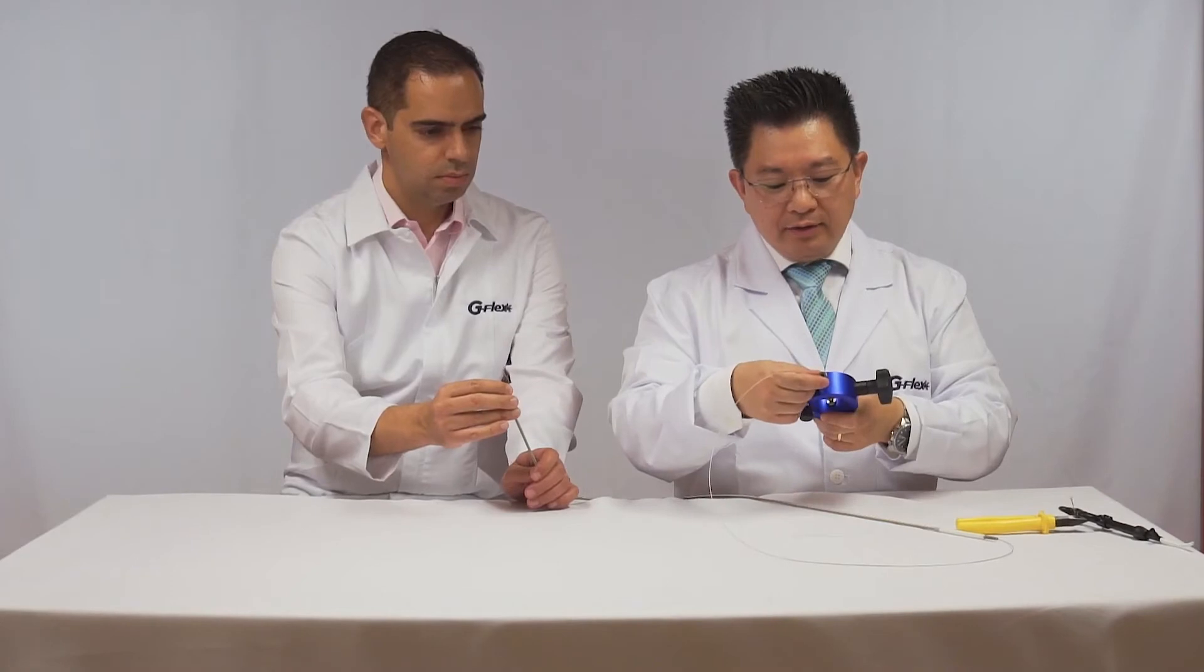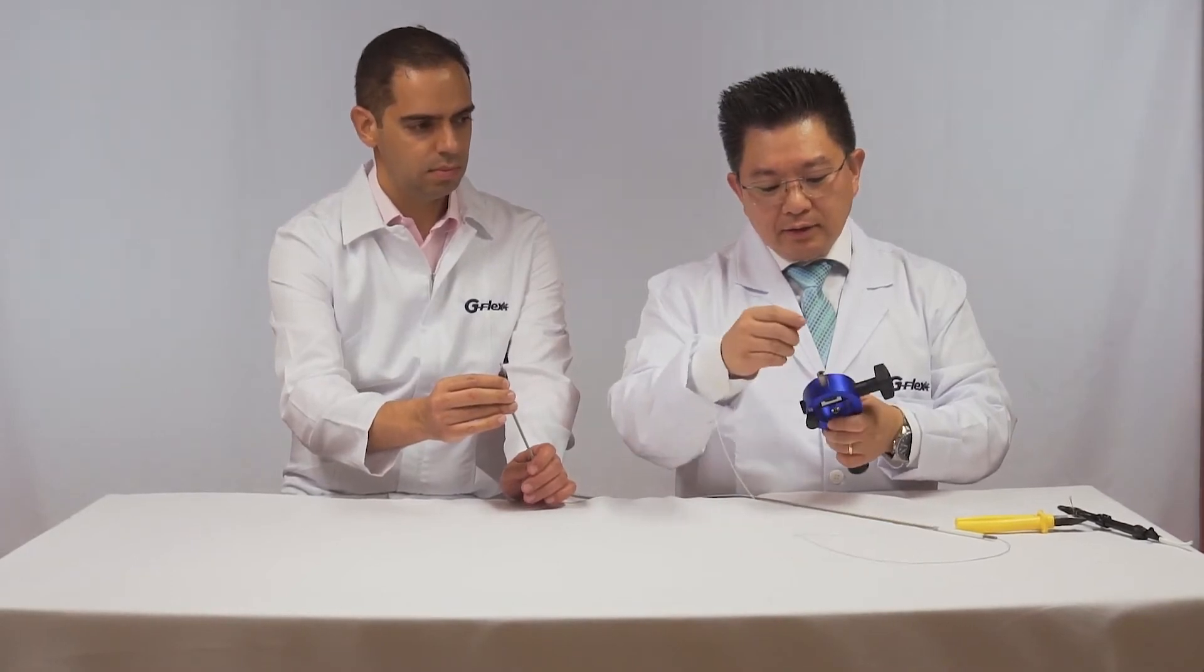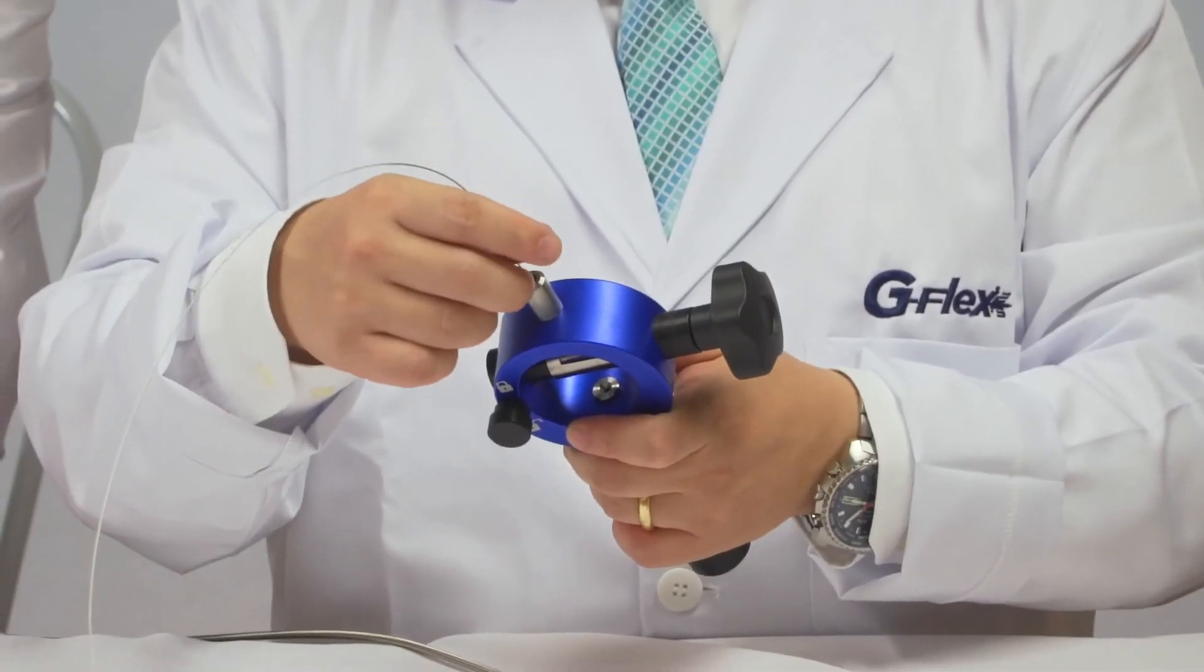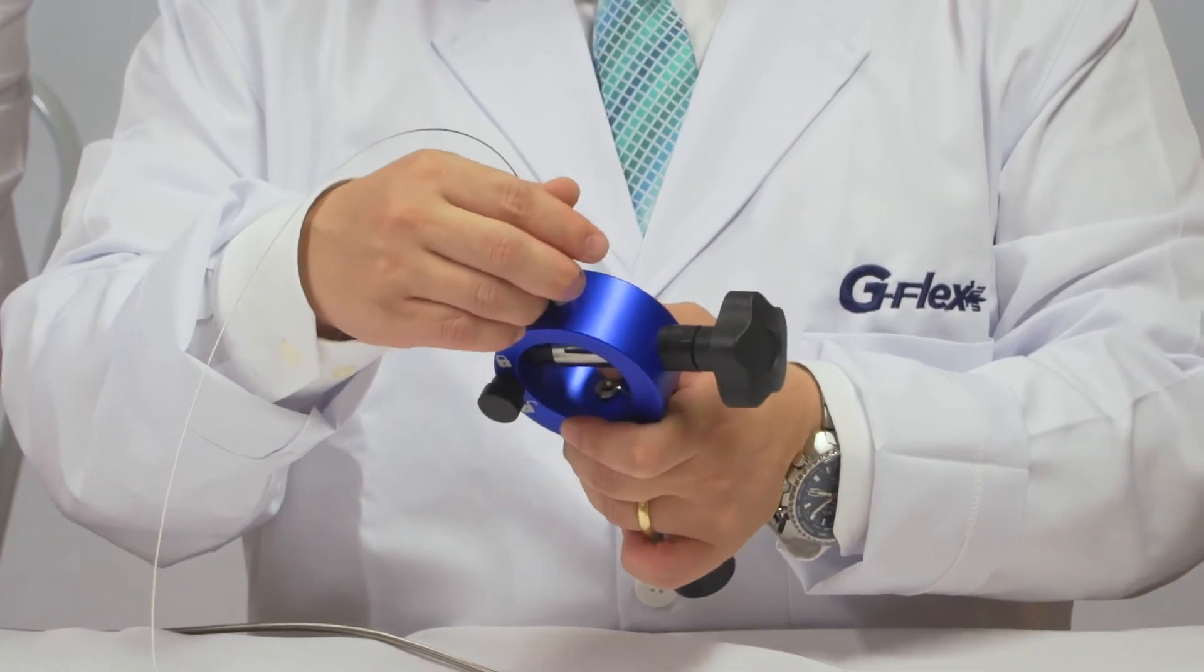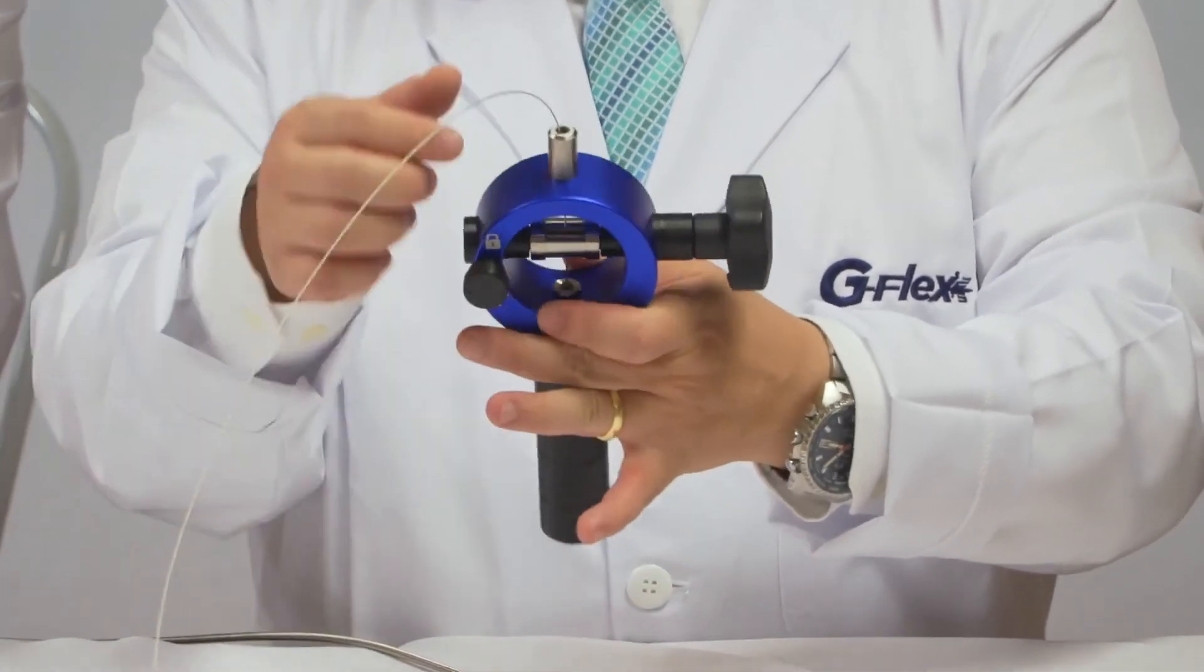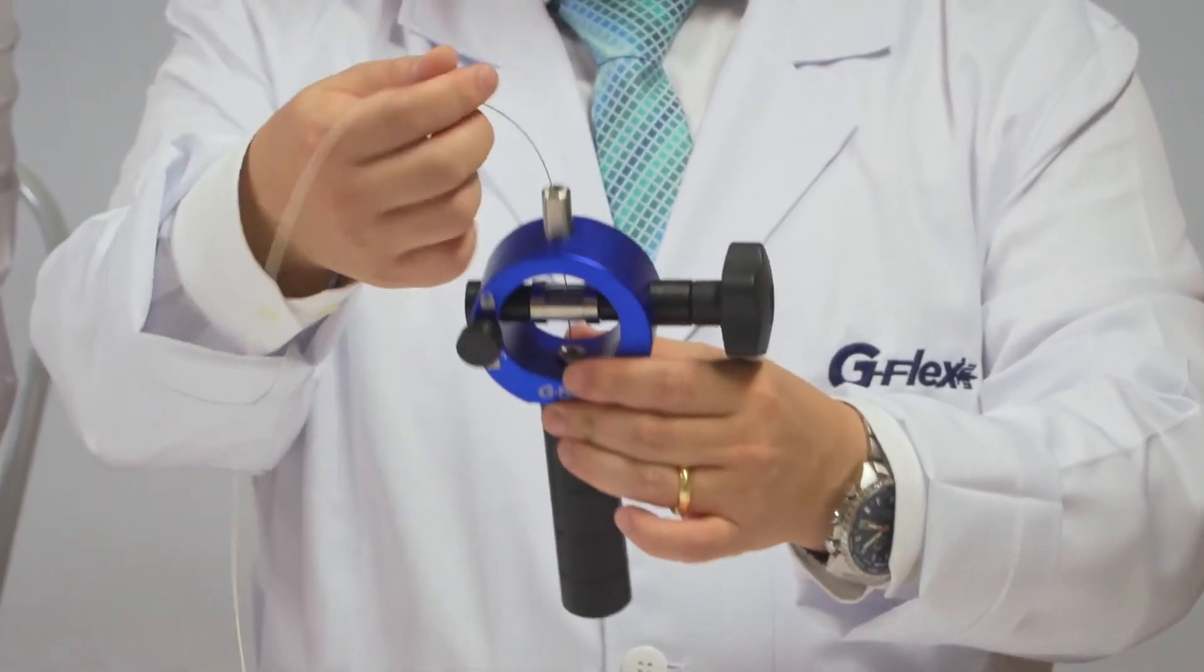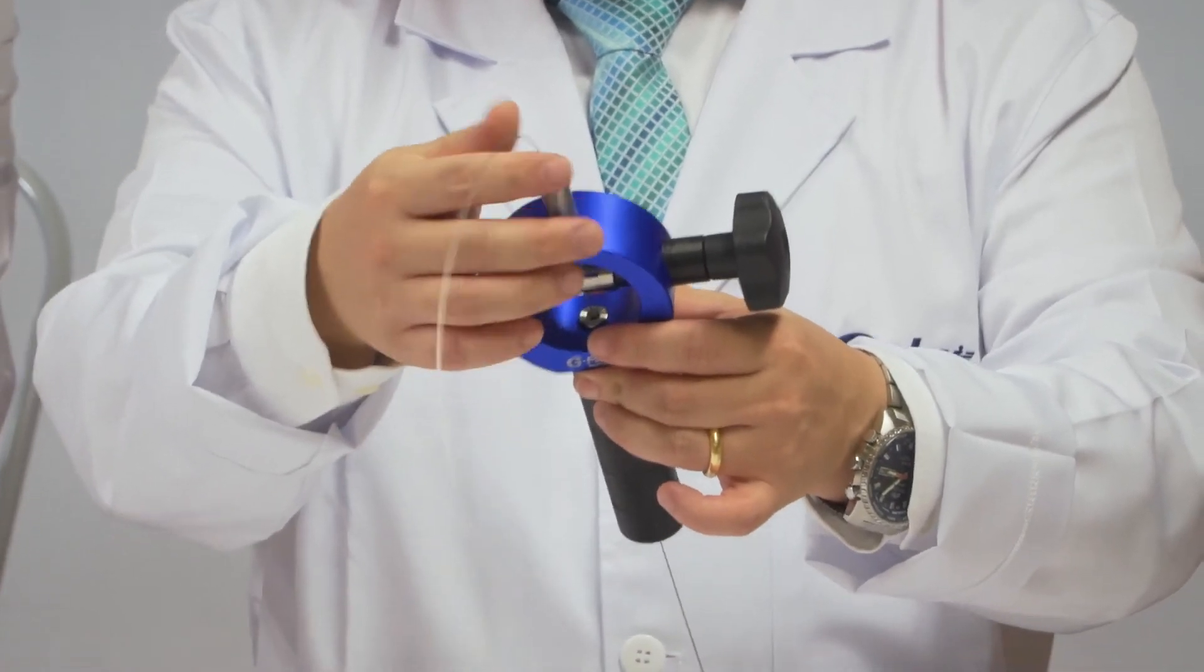As you can see, you have on top a wall where you can insert the wire that passes through the handle, like this.